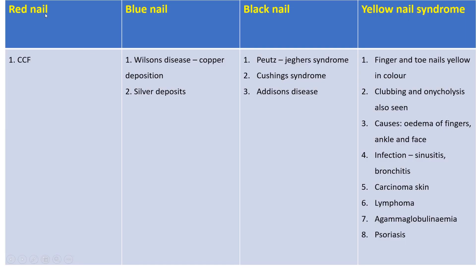Other conditions include different nail colors. Red nail is seen in congestive cardiac failure. Blue nail is seen in Wilson's disease due to copper deposition, or from silver deposits in some occupational diseases. Black nail is associated with Peutz-Jeghers syndrome, Cushing syndrome, and Addison's disease.